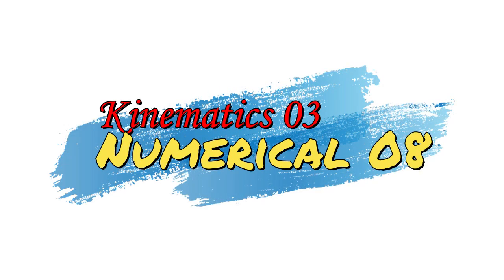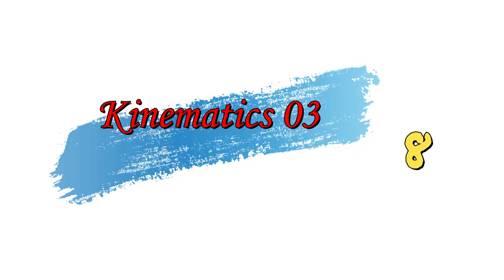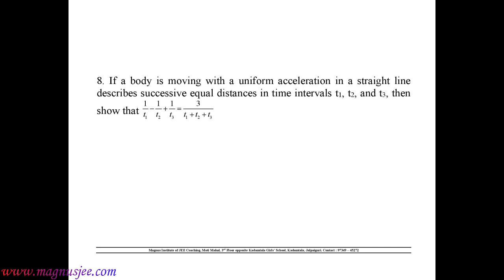Kinematics 3, Numerical Number 8. If a body is moving with uniform acceleration in a straight line and describes successive equal distances in time intervals T1, T2, and T3, then show that 1/T1 - 1/T2 + 1/T3 = 3 / (T1 + T2 + T3).